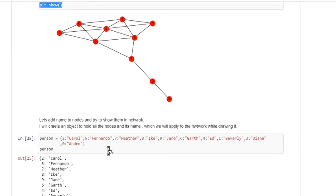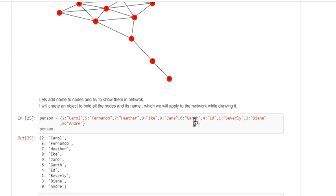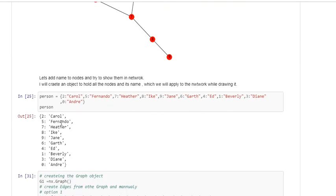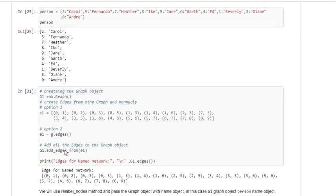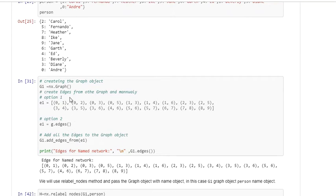For the assignment we have to add the person's name. I think all the names are in alphabetical order, so zero goes with Andre, one goes with Beverly, and so on. If you can see, this is the object I created with all the person's names here and they can be seen here.